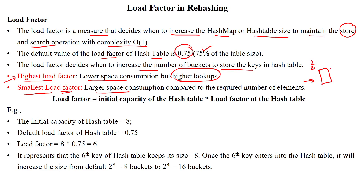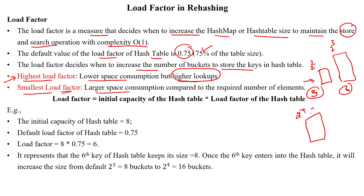With a smaller load factor, you have large space consumption and you have to keep on increasing the table size frequently. Suppose the load factor is very low — after inserting just 2 or 3 elements into a size of 2^2, you immediately have to increase to 2^3. Then after inserting 6 elements, you increase again to 2^4 (16 memory locations). So with a smallest load factor, you have to make changes frequently.